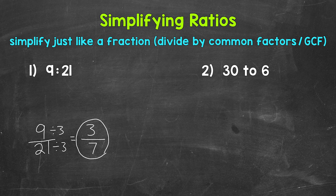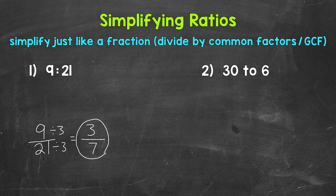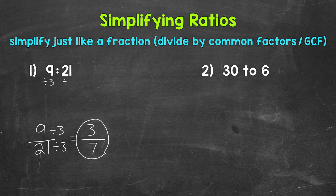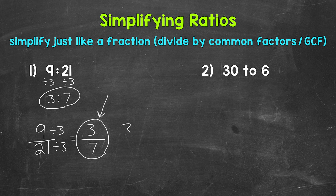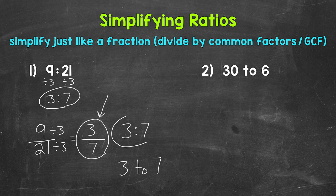Now, like I mentioned earlier, you can simplify from the original form of a ratio, so however it is originally written. So before moving on to number 2, I do want to show you that we can divide both the 9 and 21 by 3 up here as well. So divide by 3, divide by 3, and we get 3 to 7 that way as well. Now, we can also take the fractional form of our simplified ratio and rewrite it using a colon, 3 to 7, or using the word to. All of those ratios mean the same thing, so 3 to 7, or 3 to 7.